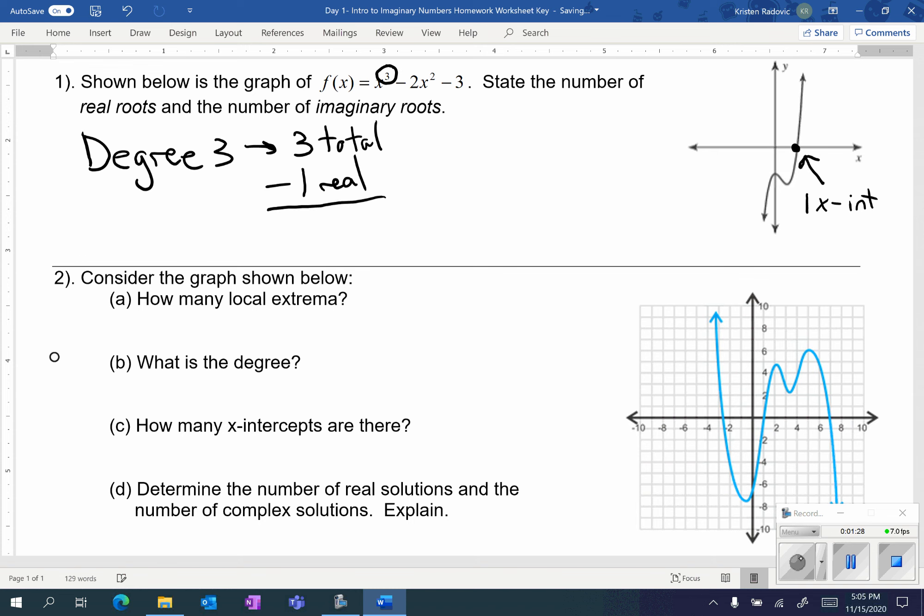The difference is going to be how many imaginary solutions you have. So three total minus one real means that there are two solutions that you can't see.